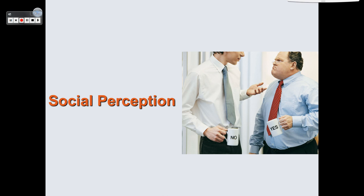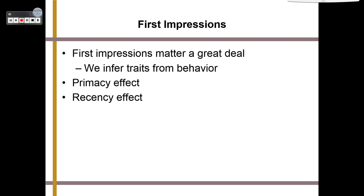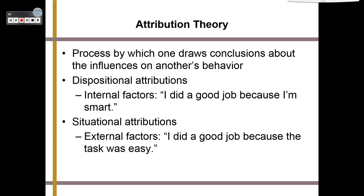The next thing we're going to talk about is social perception — examining the ways in which we form and modify our impressions of others. Our first impression usually matters a great deal. We infer traits from behavior based on the primacy effect — our first impression — or the recency effect — the most recent impression of that person. This leads us to attribution theory, the process by which we draw conclusions about influences on another's behavior. We may have dispositional attributions — internal factors, like 'I did well because I'm smart' — or situational attributions — external factors, like 'the task was easy.'